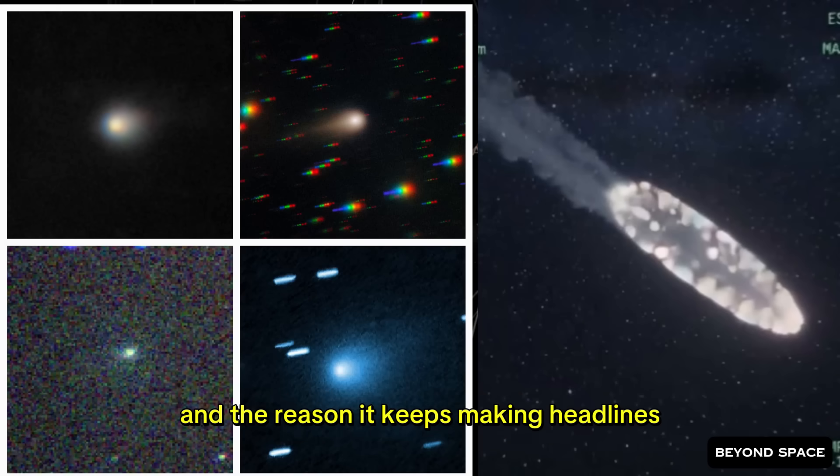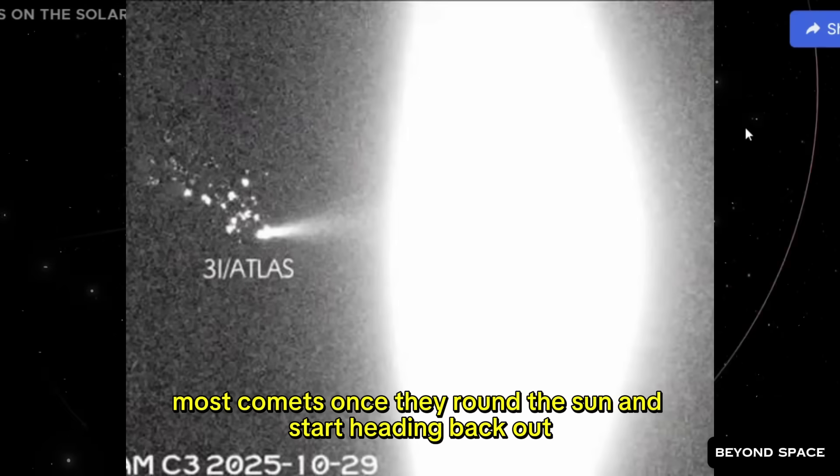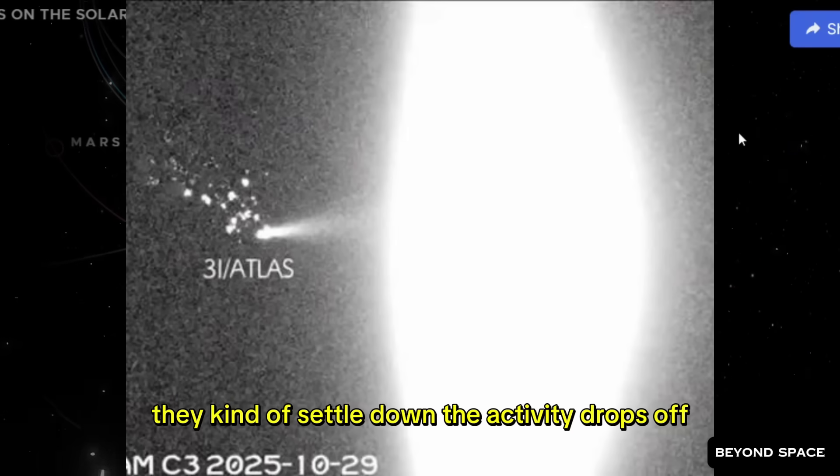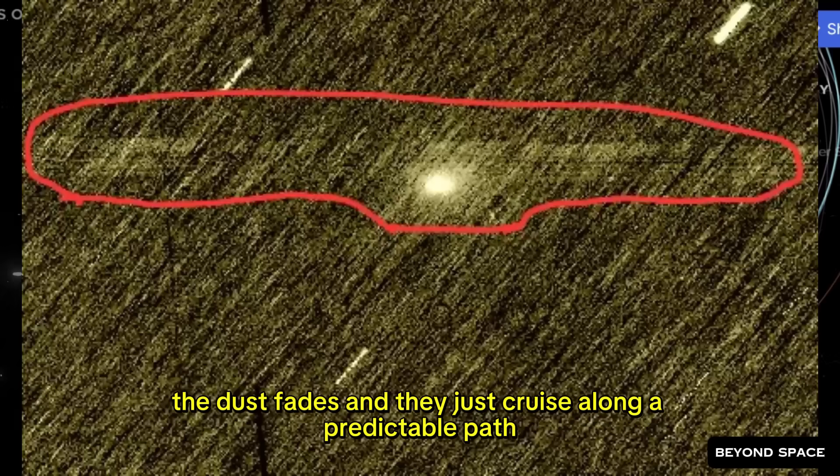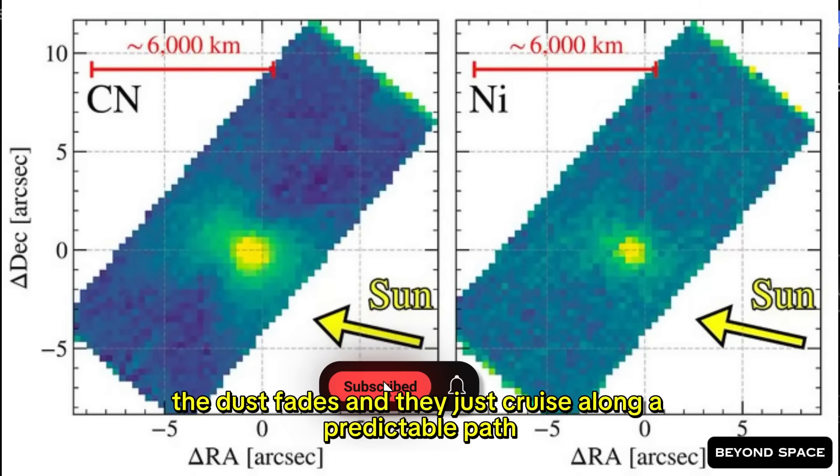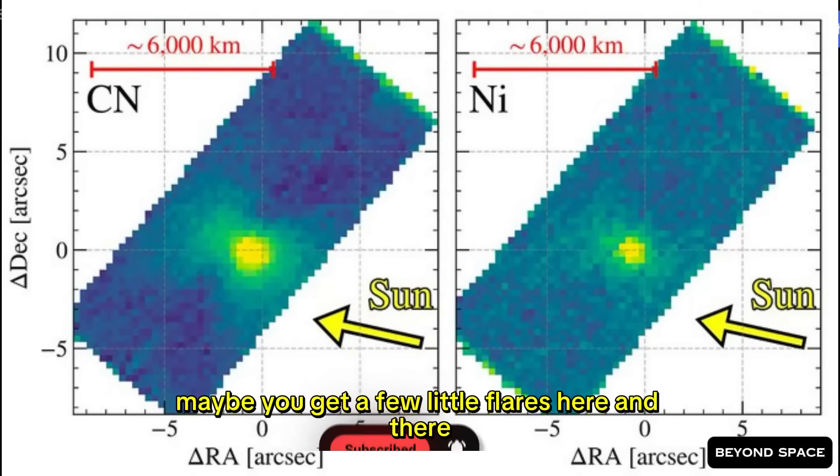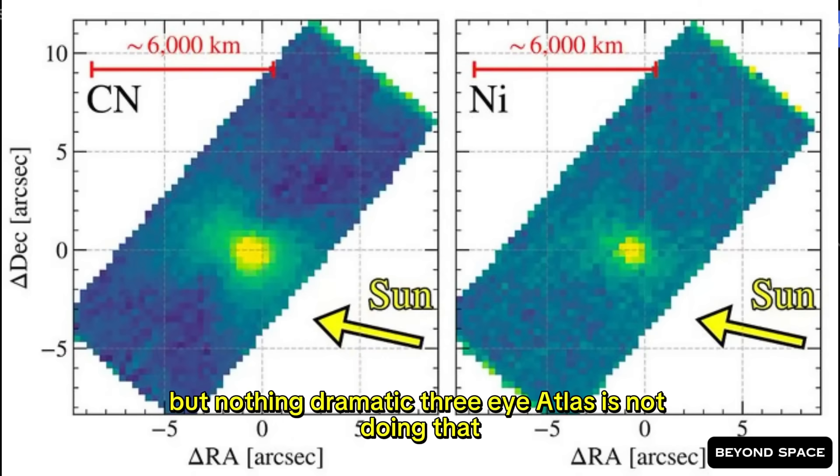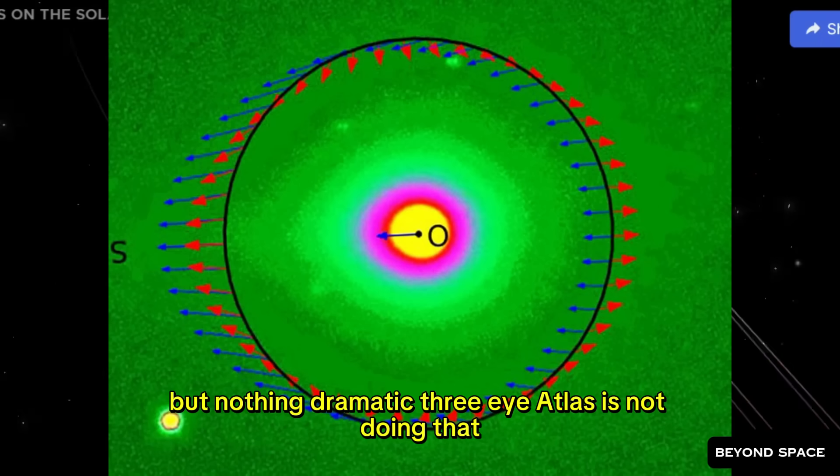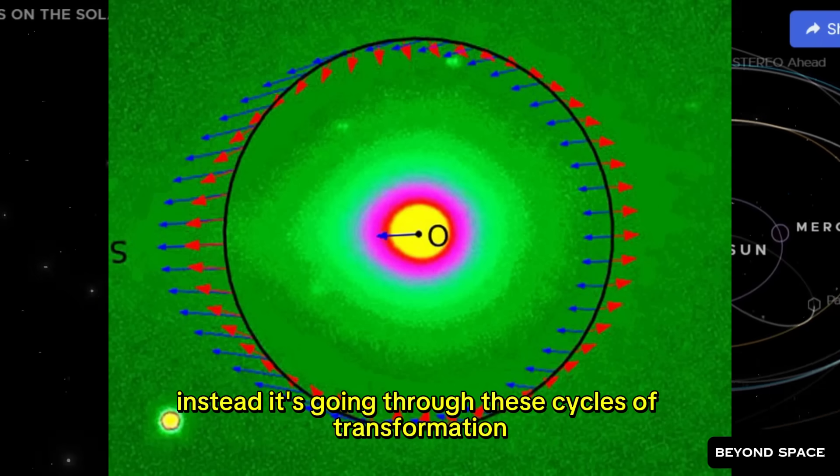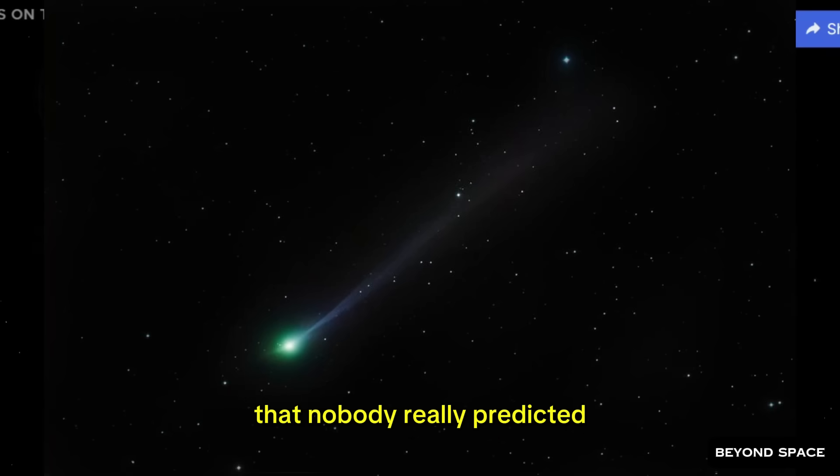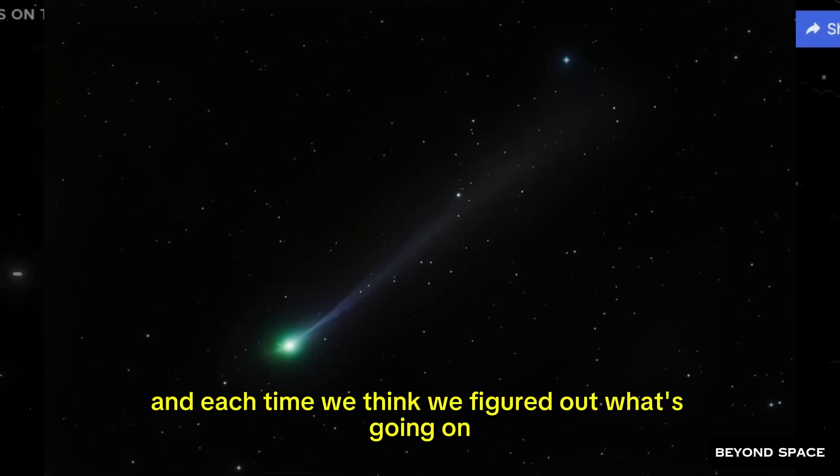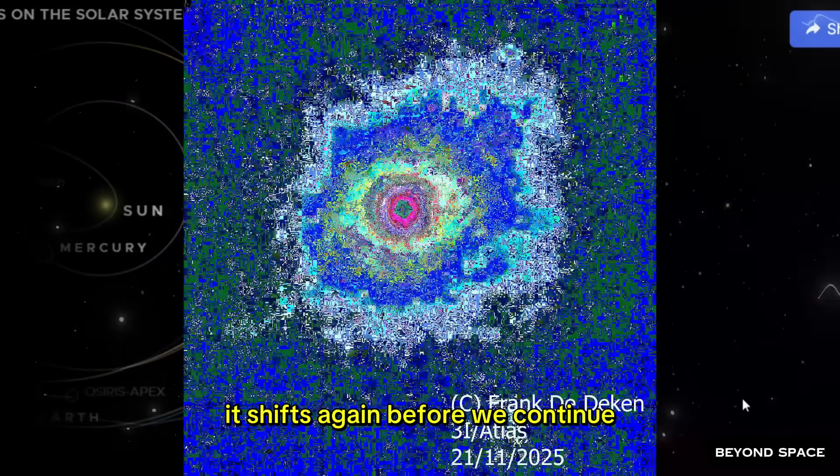And the reason it keeps making headlines is because it won't stop changing. Most comets, once they round the sun and start heading back out, they kind of settle down. The activity drops off, the dust fades, and they just cruise along a predictable path. Maybe you get a few little flares here and there, but nothing dramatic. 3i Atlas is not doing that. Instead, it's going through these cycles of transformation that nobody really predicted. And each time we think we've figured out what's going on, it shifts again.